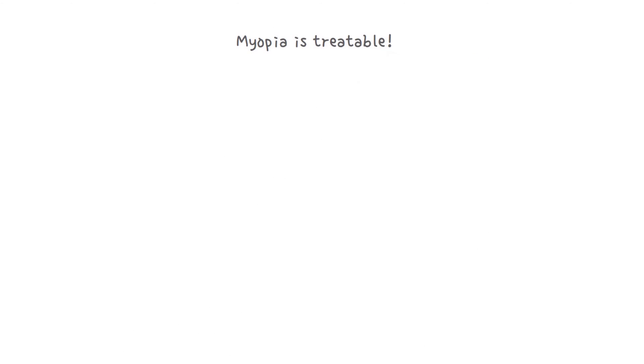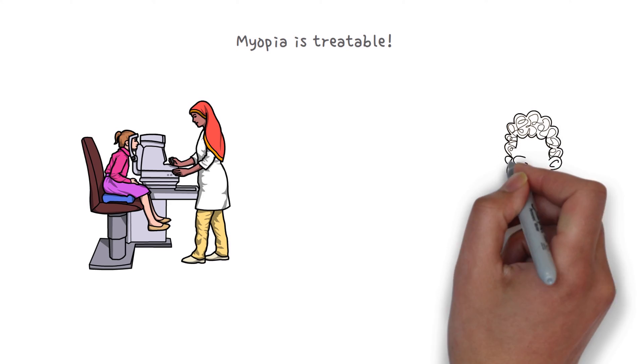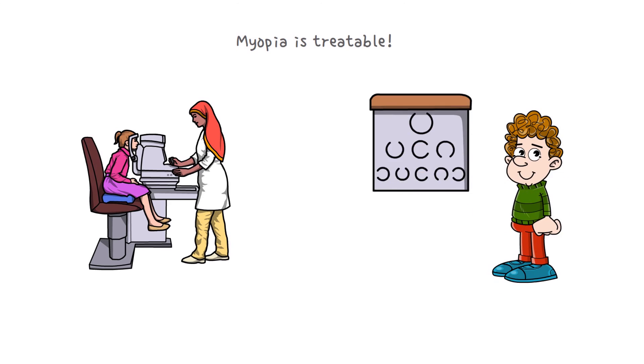Myopia is a treatable condition, and when it comes to children, it is a condition that can be slowed down with the right treatment.